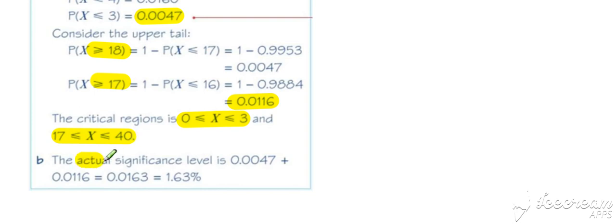The actual significance level is always going to be less than the significance level that was quoted. In this case, it's the probabilities of being in the critical region, so the probabilities from this one and this one added together—the total probabilities of being inside the critical region, 1.63% on this occasion.